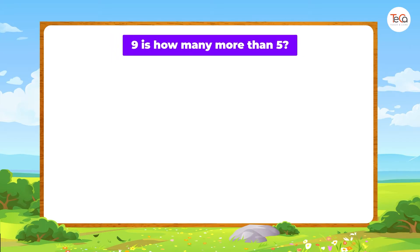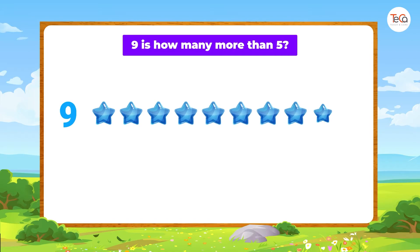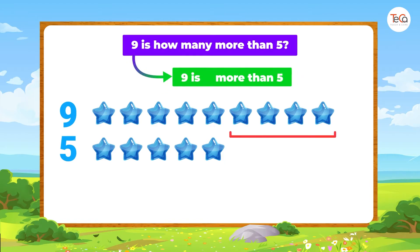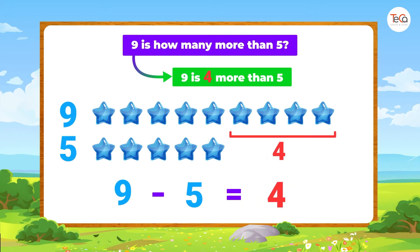Next: nine is how many more than five? Look, we have nine stars and five stars. Can you see? Nine is four more than five. Do you notice? Nine minus five equals four. So to find how many more, we find the difference between the two numbers.